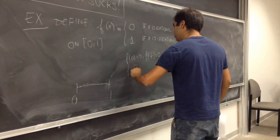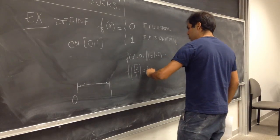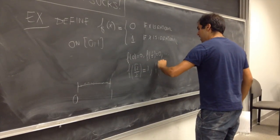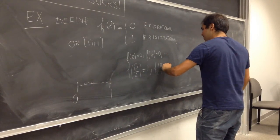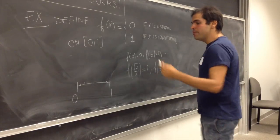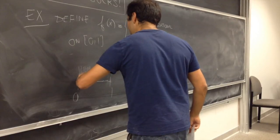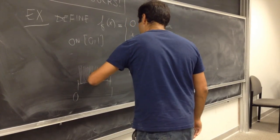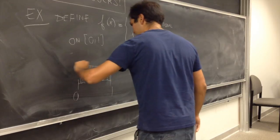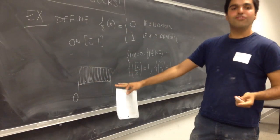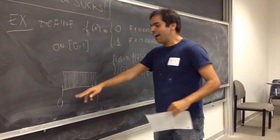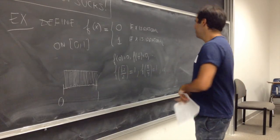So f of square root of 2 over 2, that should be 1. f of pi over 4, that should be 1. And many, many other ones. So there are many irrational numbers. And at all those points, it's just 1. So it's like this crazy function that oscillates wildly between 0 and 1.